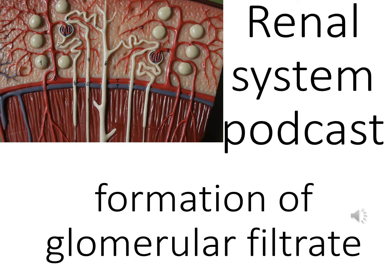When you think about it, if there's a million per kidney, they've got to be pretty small — otherwise they wouldn't fit in. There are two basic components to the nephron: the top part is the renal corpuscle and the bottom part is the tubule. The renal corpuscle contains the glomerular capsule — still often called Bowman's capsule — and inside that is the glomerulus, the ball of capillaries. The tubule consists of a proximal convoluted tubule, a descending and ascending loop, a distal convoluted tubule, and a collecting duct.